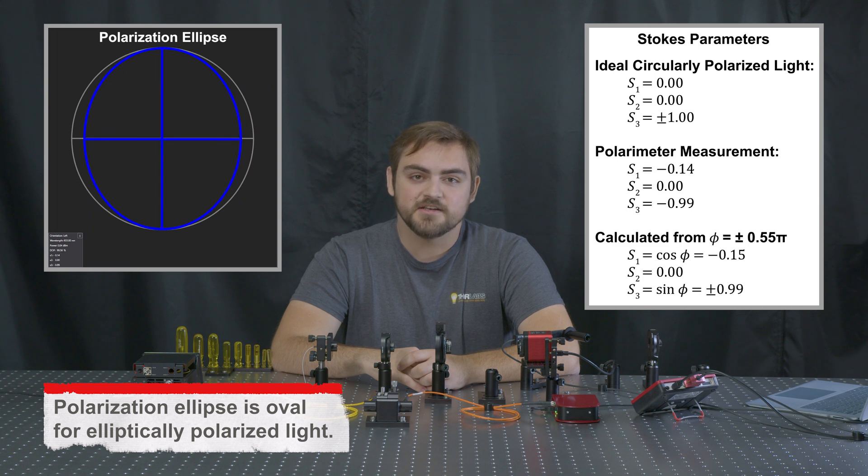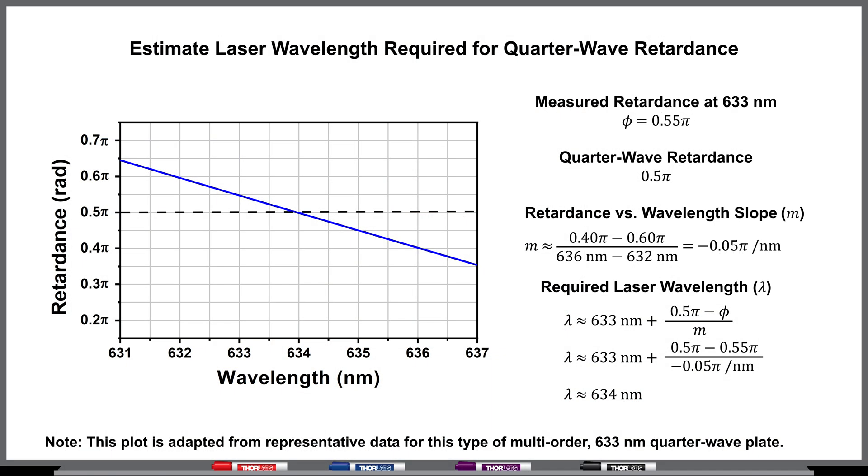We can also calculate the expected polarization state based on our measured retardance, and we can see that lines up well with what we're measuring on the polarimeter. If your application requires an exact quarter wave of retardance and the wavelength isn't critical, it may be possible to tune the wavelength of your source until a true quarter wave retardance is observed.